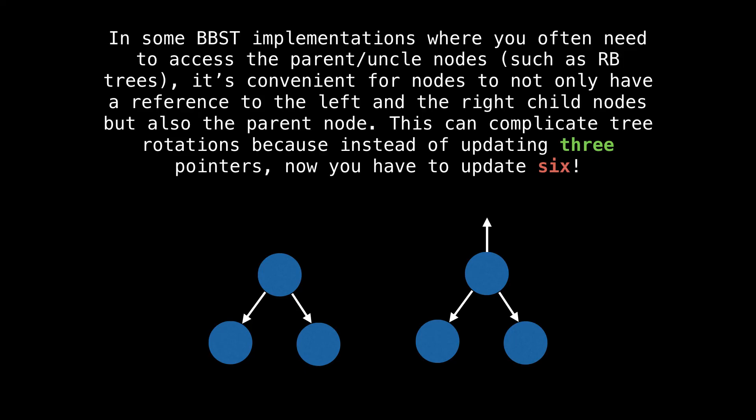We just finished looking at the case where each node has a reference to the left and the right child nodes. But in some balanced binary search tree implementations, it's more convenient for nodes to also have a reference to the parent node. This complicates tree rotations because now, instead of updating three pointers, we need to update six pointers. Let's have a look.